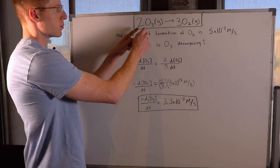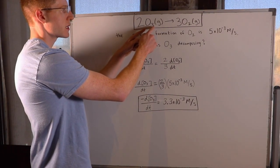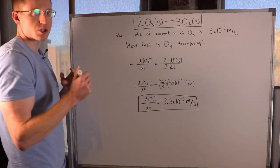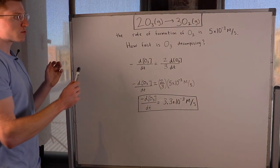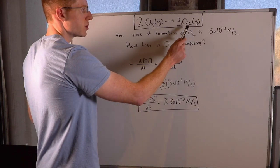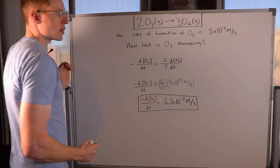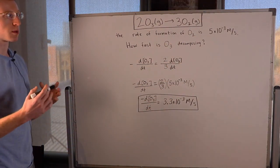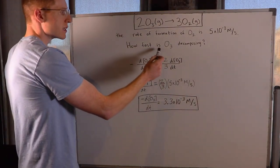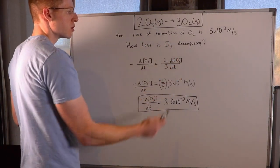In this problem I've got a reaction here in which 2 O3 gas is converted into 3 O2 gas, and we know the rate of formation of O2, our product, is 5 times 10 to the negative 3 molar per second. How fast is O3 decomposing?